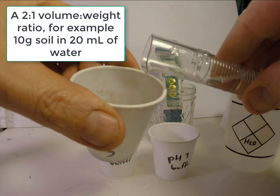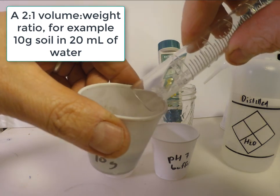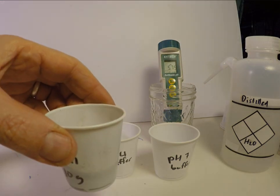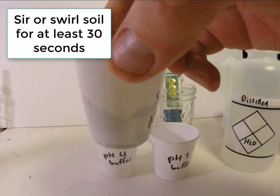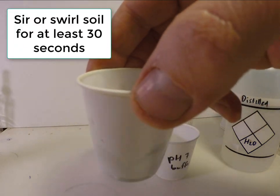In addition, field moist soil could also be used. Soil pH is fairly equivalent between moist and air-dried soil. The soil should be swirled for at least 30 seconds and up to 1 minute.